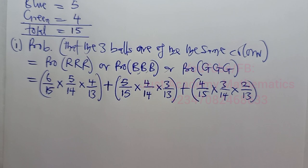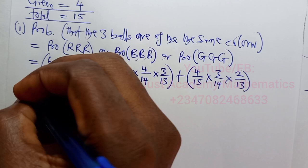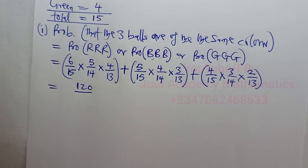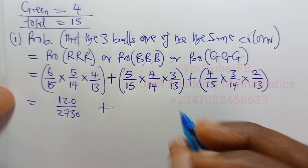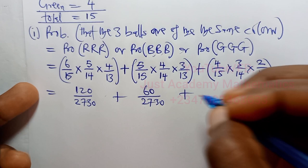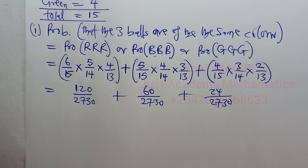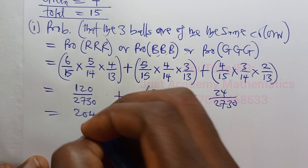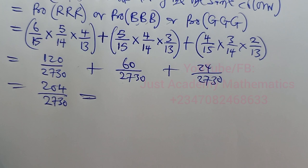So we work out each product. For red: 6×5×4 = 120, over 15×14×13. For blue: 5×4×3 = 60, over the same denominator 2730. For green: 4×3×2 = 24, over 2730. Because the denominators are the same, we add the numerators: 120 + 60 + 24 = 204. So the final answer is 204 over 2730.